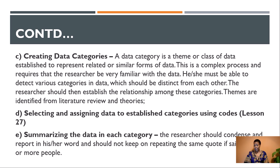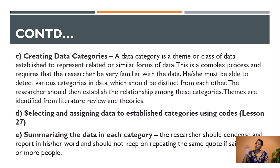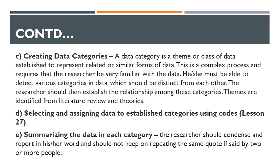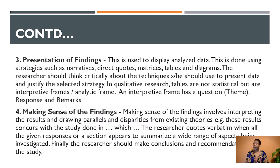Once you create the data categories, you assign data to the established categories using codes. For example, if one category is called 'divorce,' you bring in all information regarding divorce discussed by your respondents and transfer it verbatim to that category. We have discussed this in detail in lesson 28. Then you summarize the data in each category, where as a researcher you condense and report verbatim what respondents reported regarding your phenomena. That is step two.